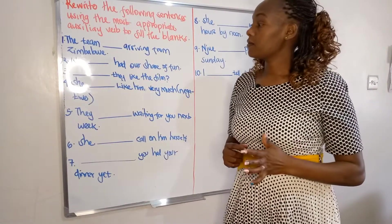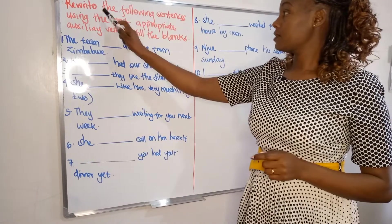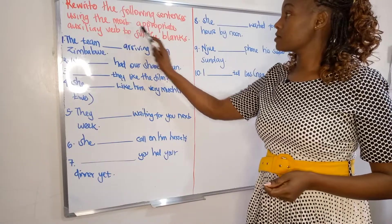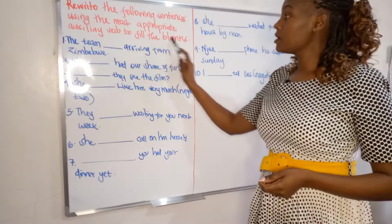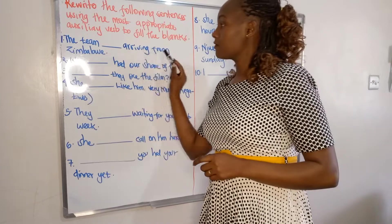Hi, join me as you tackle a few questions on the auxiliary verb. We are required to rewrite the following sentences using the most appropriate auxiliary verb to fill in the blank spaces. Number one: the team dash arriving from Zimbabwe.